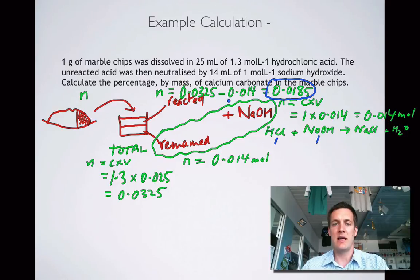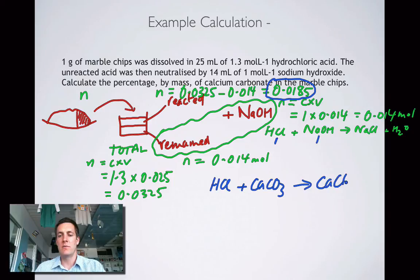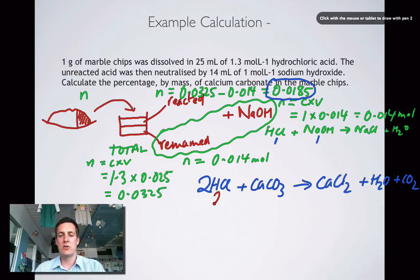What acid? That is the acid that reacted with the calcium carbonate from the marble chips. What reaction does that involve? Well, that's hydrochloric acid reacting with calcium carbonate. And that's producing calcium chloride and H2O and CO2. But that's not a balanced equation. Now it is. And now we can see that there's two moles of HCl to every one mole of calcium carbonate.